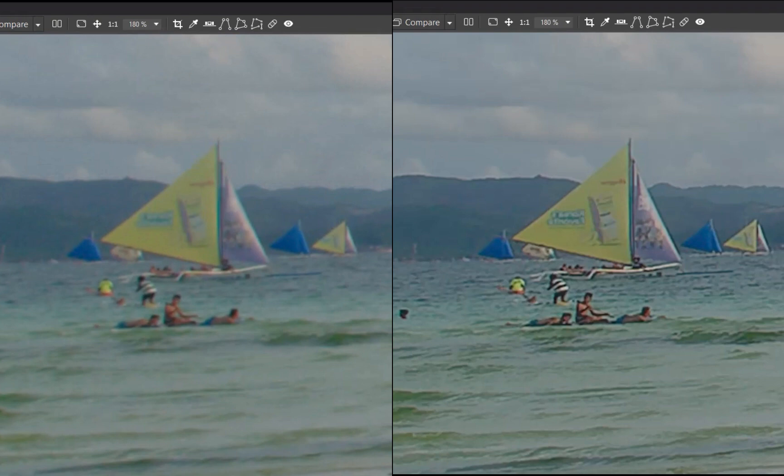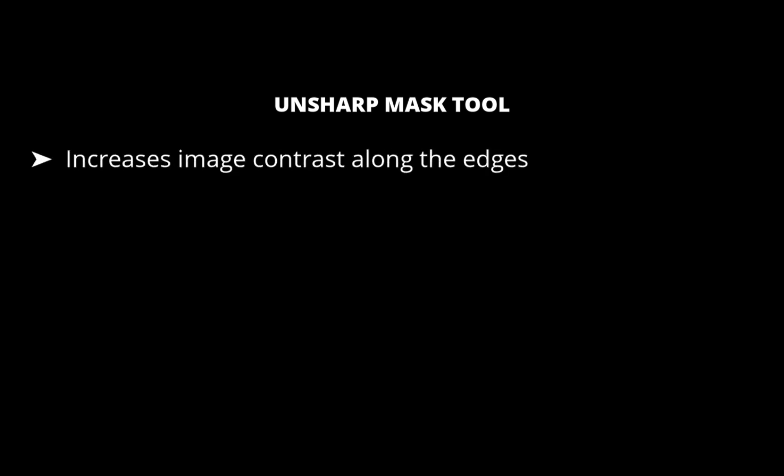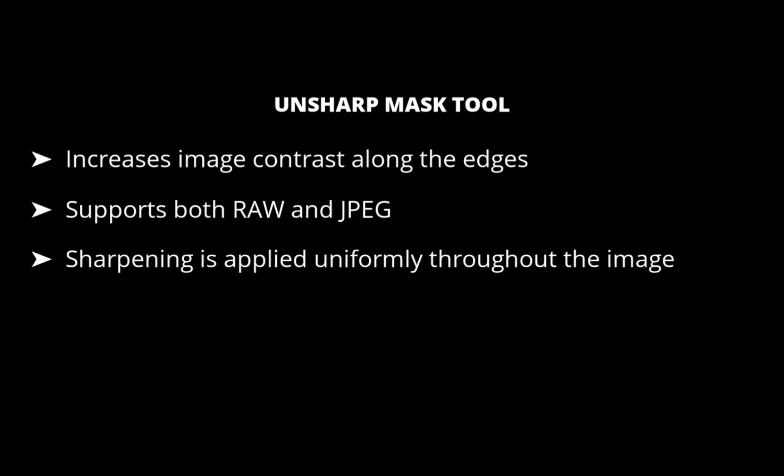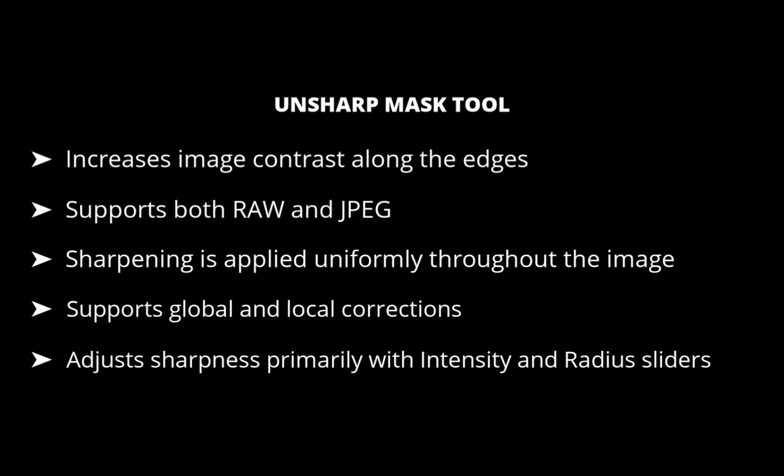Let's move on to the next tool: the unsharp mask. The unsharp mask increases the image contrast along the edges of an object in a photo. Unlike lens softness correction, this tool works with both RAW and JPEG, and the sharpening is applied uniformly throughout the image. Another advantage is that it can be applied globally and locally. Drag the intensity slider to increase the amount of contrast in the pixels — this contrast enhancement creates the illusion of greater sharpness. Adjust the radius slider to determine the number of neighboring pixels that will affect the sharpening; the greater the radius, the more obvious the sharpening.